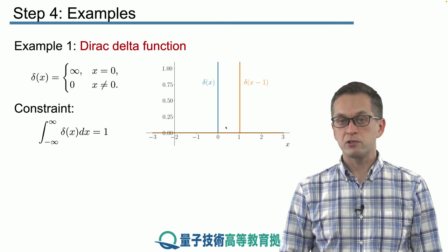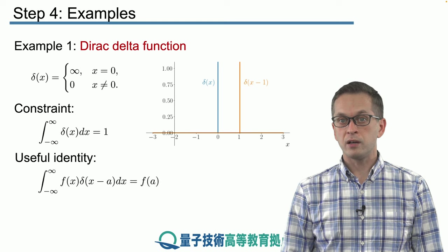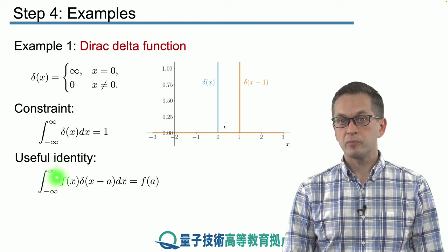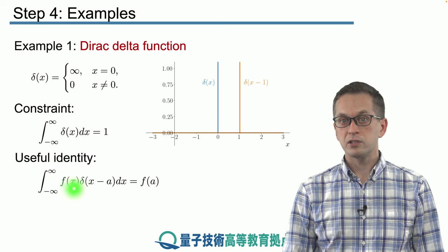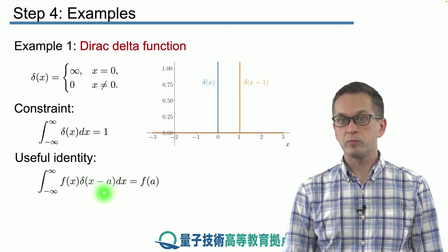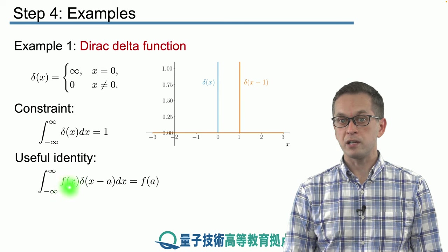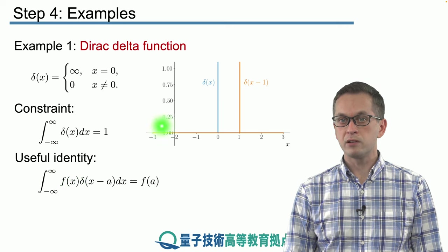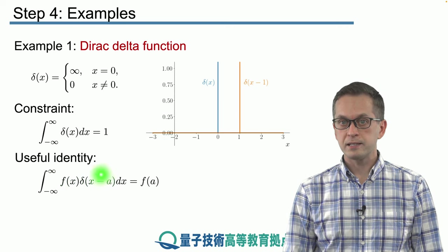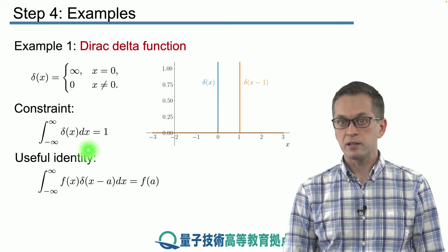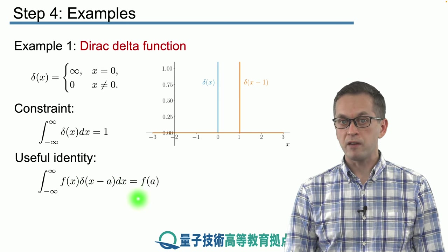And furthermore using this constraint we have this following identity which we will use repeatedly in this step. And that is if you take the inner product of any function f(x) with the Dirac delta function, it pulls out the value of the function at x equals a. So this entire integral then becomes f(a).